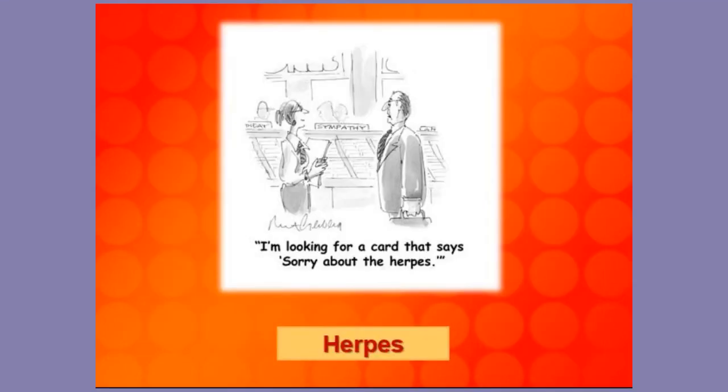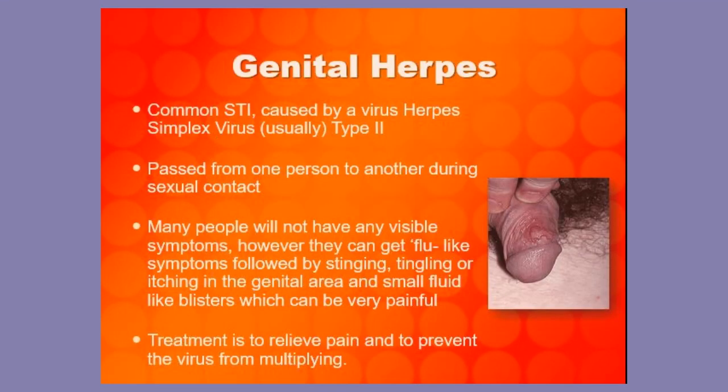There are two main strains of herpes simplex virus, HSV. HSV2 is the genital one and HSV1 is the usual cold sore that many people have on their mouths. Oral herpes, HSV1, can be passed genitally. Sexual health services can provide anti-retroviral medication which can abort the life cycle of HSV, but it's not a cure.